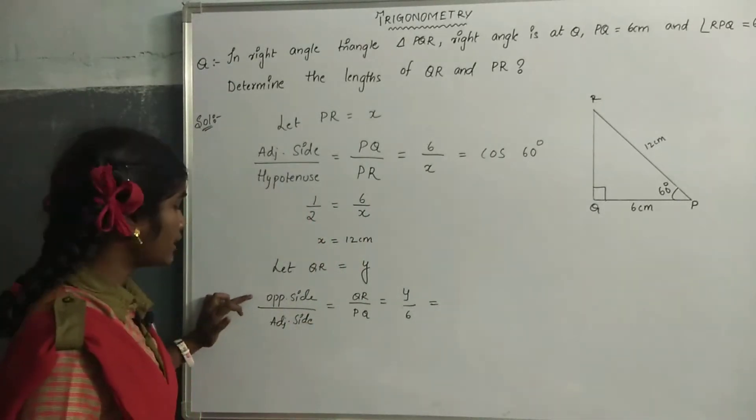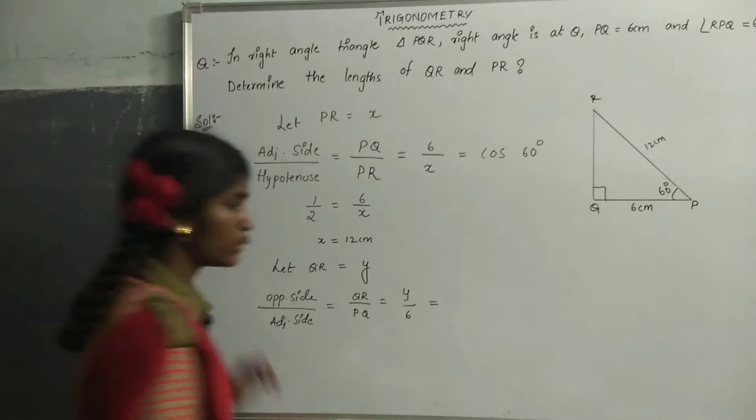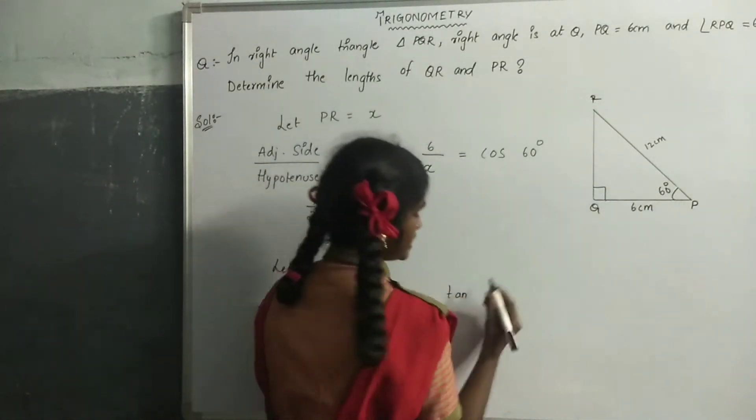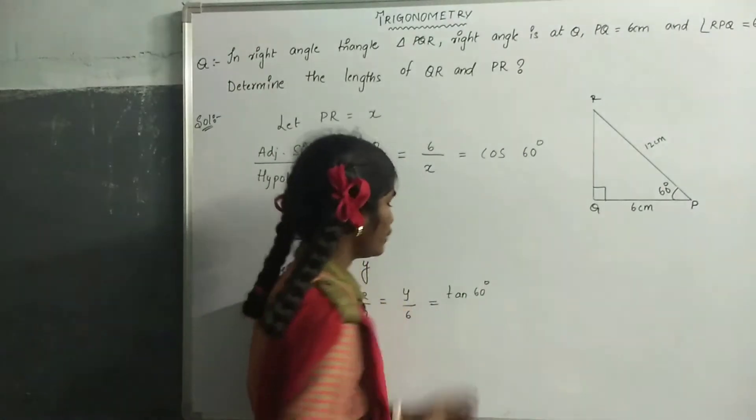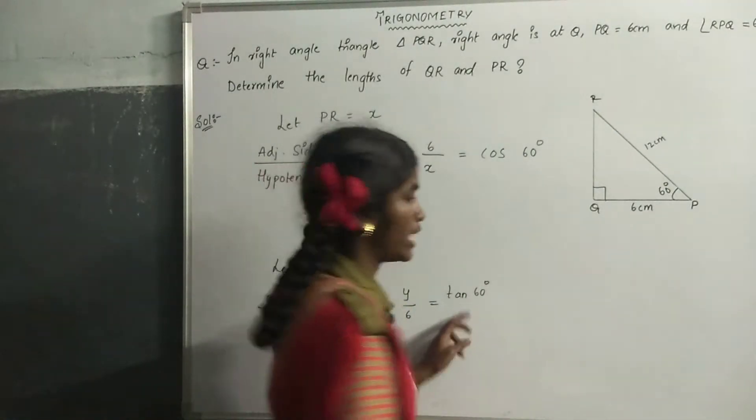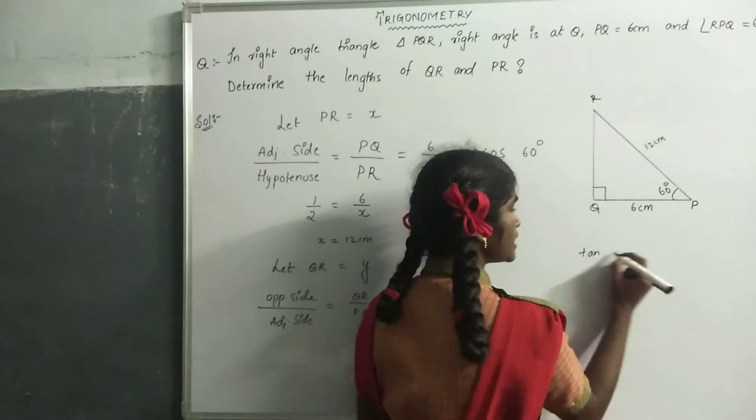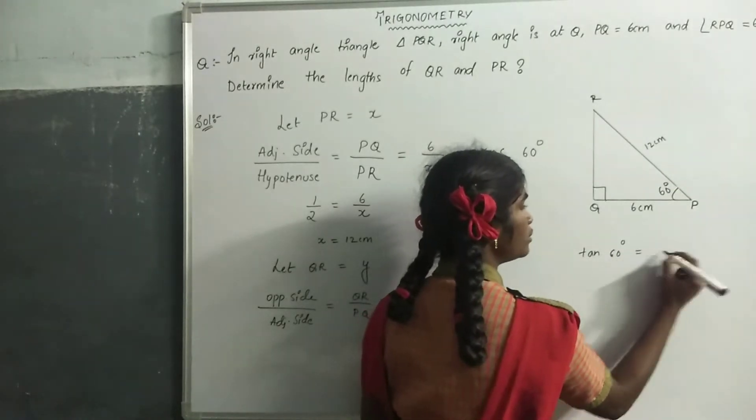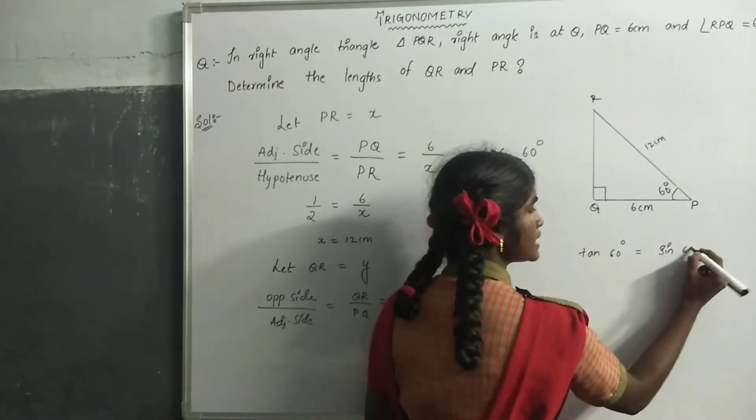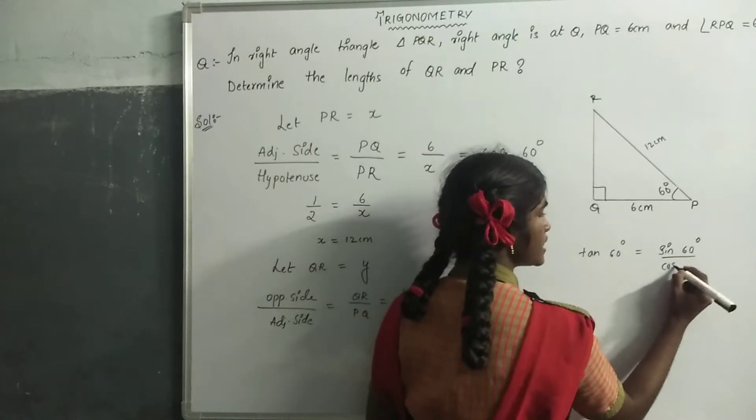We know that opposite side by adjacent side equals tan 60 degrees. To find tan 60 value, tan 60 equals sin 60 by cos 60.